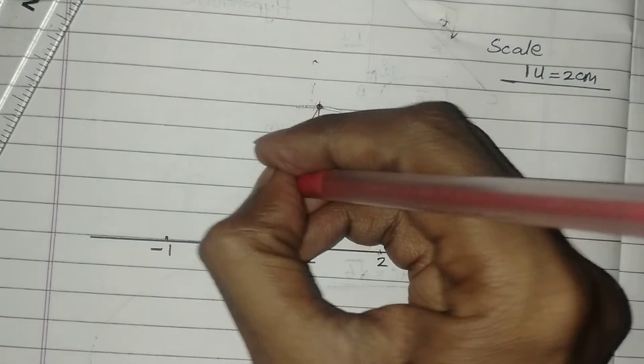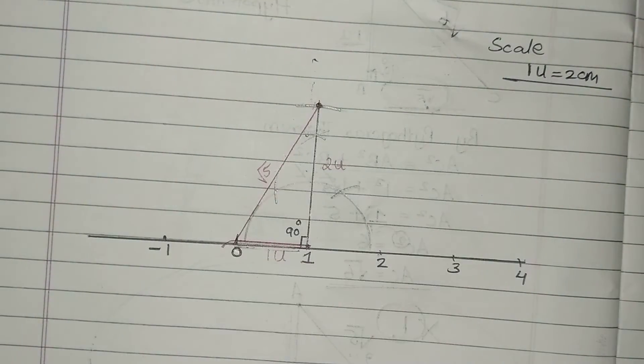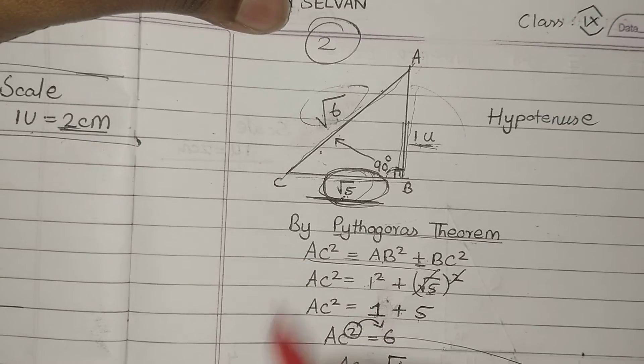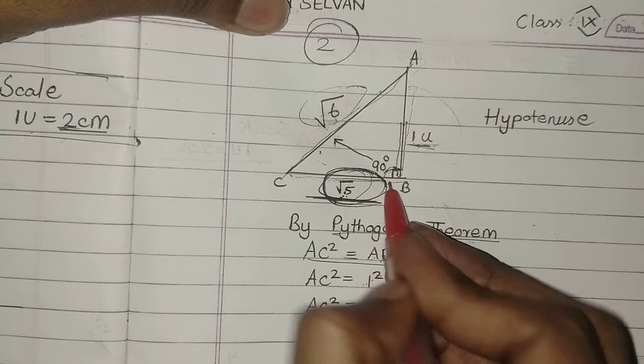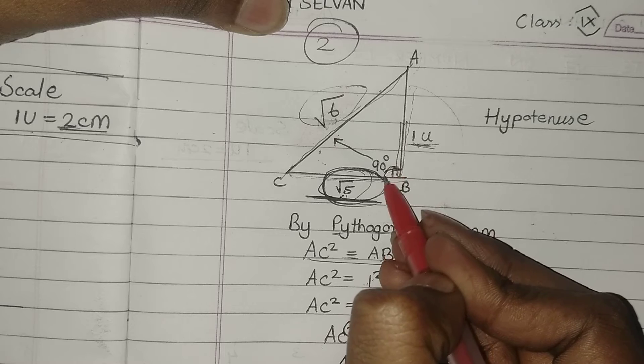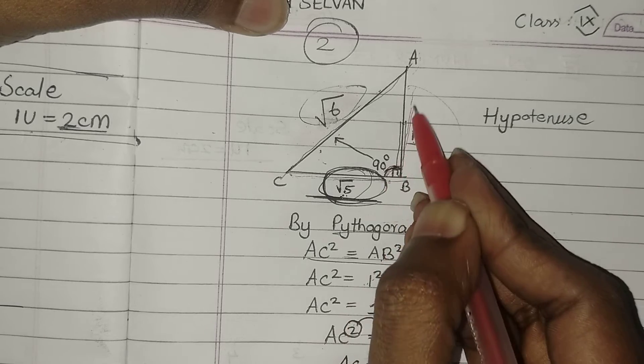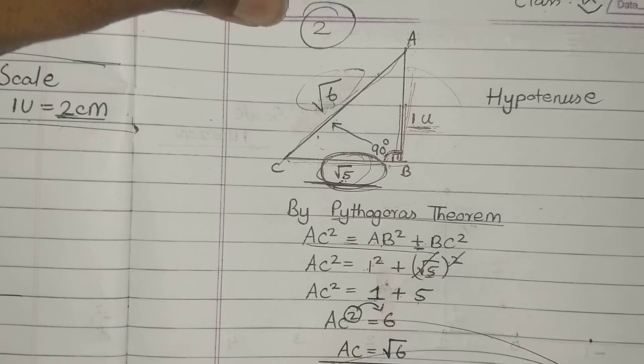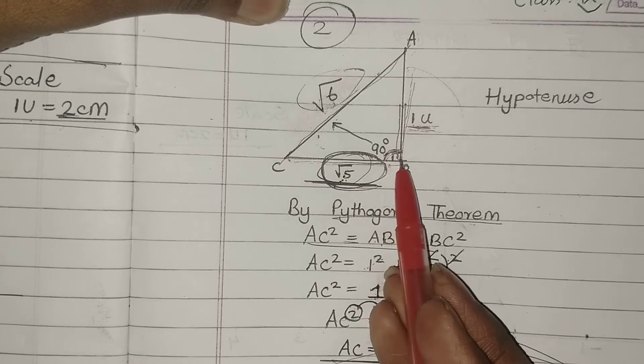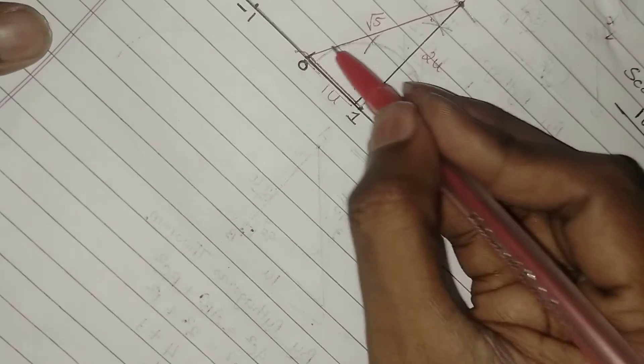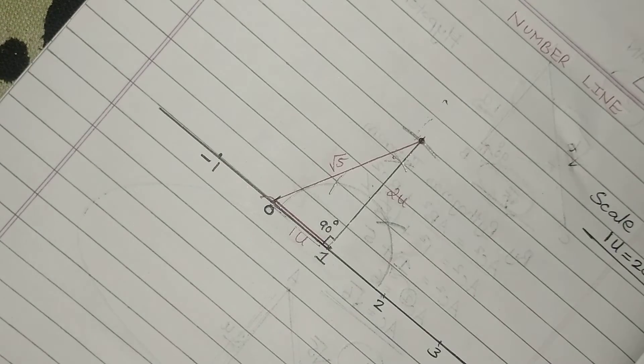So this is my hypotenuse which gives a measure of root 5. Step 1 is over. Now let's move on to step 2 procedure. We have root 5. Now we need to draw a perpendicular line. On that perpendicular line we need to construct 1 unit. From root 5, I have to construct a perpendicular line like this. If this is my root 5, from this point, take a compass.